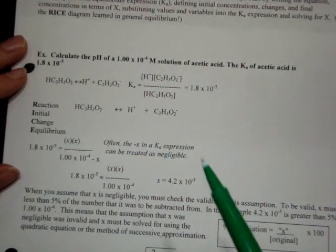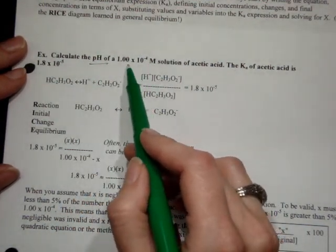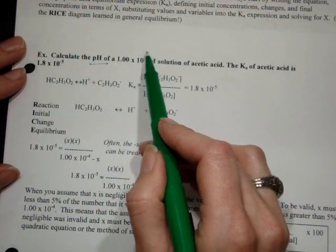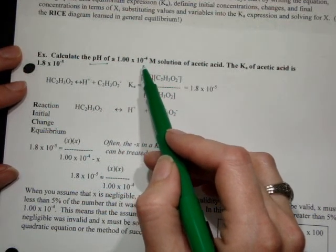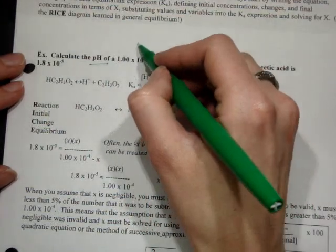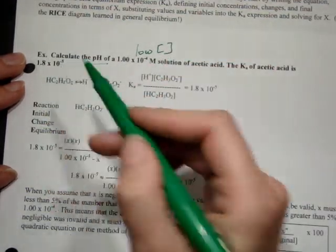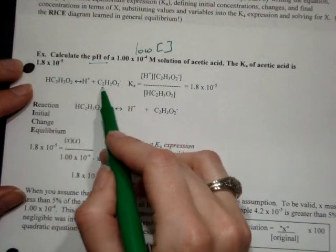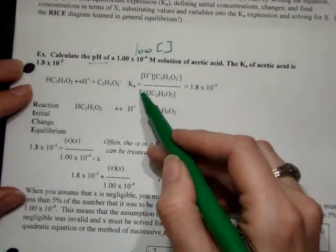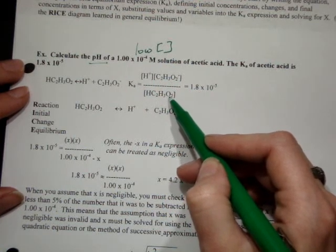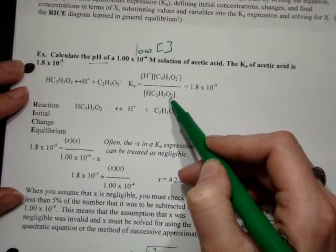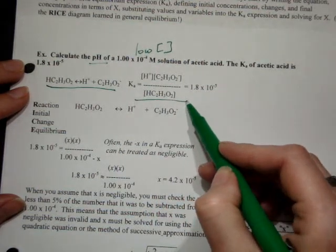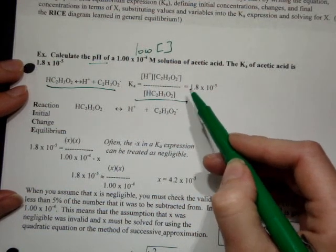In the example problem, we're calculating the pH of a 1×10⁻⁴ molar solution of acetic acid. This is a very low concentration, so we may or may not be able to cancel the X, even though we have a pretty small Ka. The first thing I always do is set up my equilibrium expression. It's a good idea to set up the Ka as well, and the actual reaction itself, because you might get partial credit.